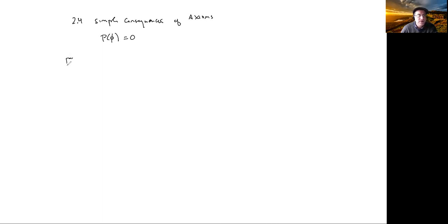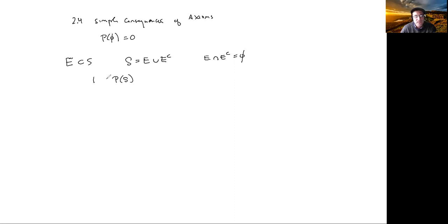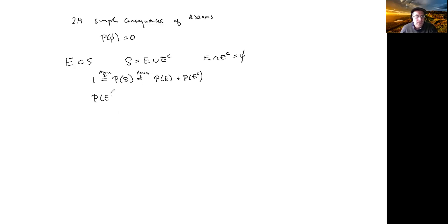Suppose E is a subset of S, so it's an event. Then S equals E union E-complement, and notice that E intersect E-complement is the empty set — so these are mutually exclusive. Axiom 2 says P of S is 1, and axiom 3 says that equals P of E plus P of E-complement. So P of E plus P of E-complement equals 1, which tells us how to compute the probability of the complementary event: it's 1 minus the probability of the event. That's an important result.